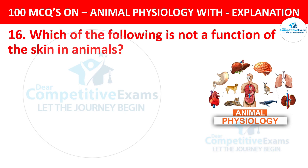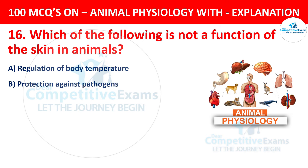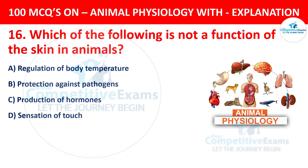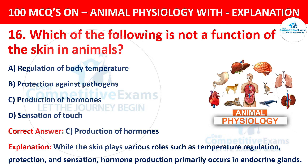Question number 16. Which of the following is not a function of the skin in animals? The options are regulation of body temperature, protection against pathogens, production of hormones, or sensation of touch. The correct answer is C, production of hormones. While the skin plays various roles such as temperature regulation, protection, and sensation, hormone production primarily occurs in the endocrine system.